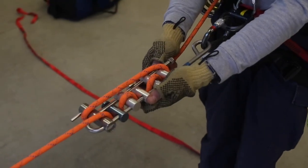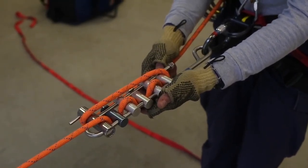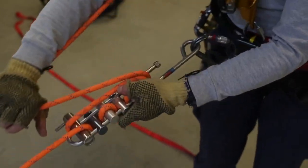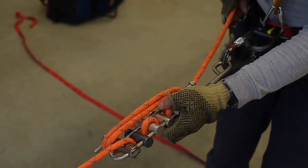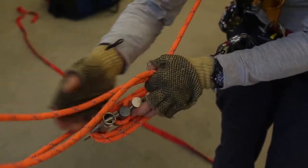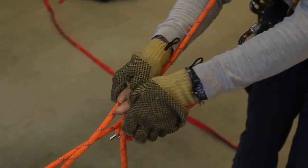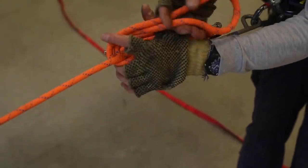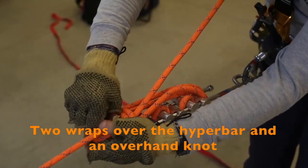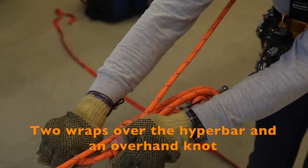If at some point we feel we need to stop and work hands-free we can tie off the brake bar rack by taking a second wrap over the hyperbar and then just tying a big overhand right over the front of the device. And we'll do that as close to the top of the rack as we can.